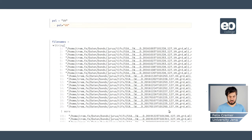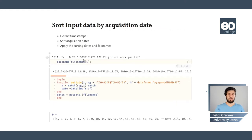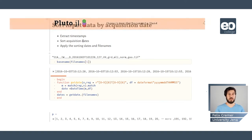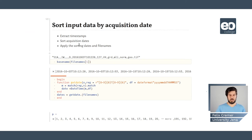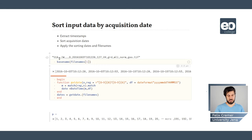In this case, the file list has 200 entries, which we can then use to construct our DataCube. Now we want to sort the input data by the acquisition date. First we extract the timestamps, then we sort them by date, and then we apply the sorting on both the dates and the file names.